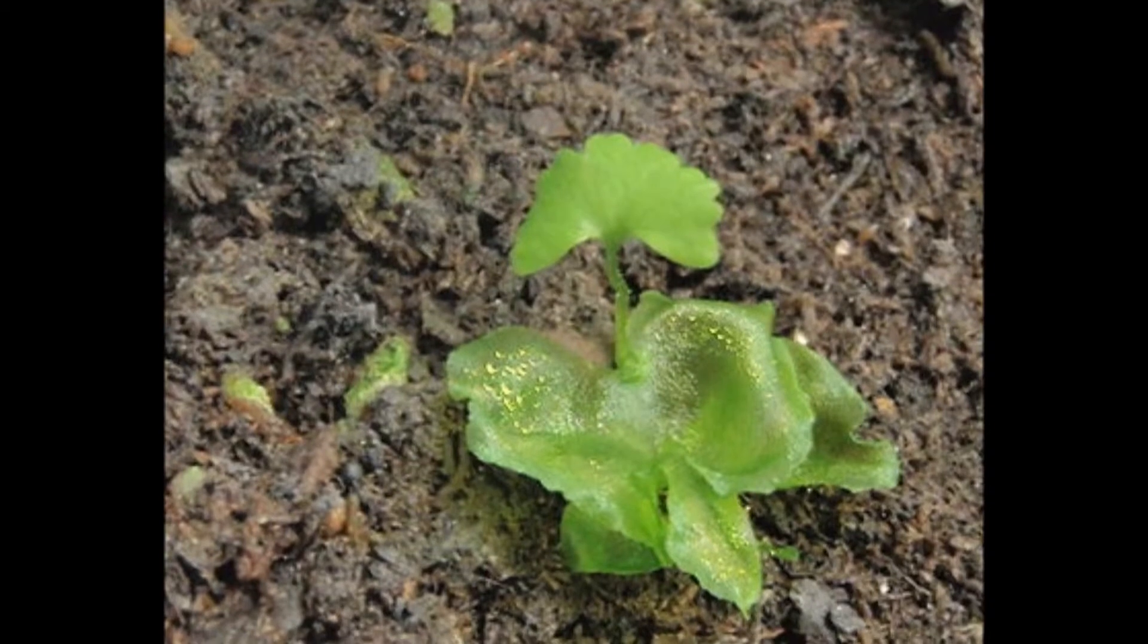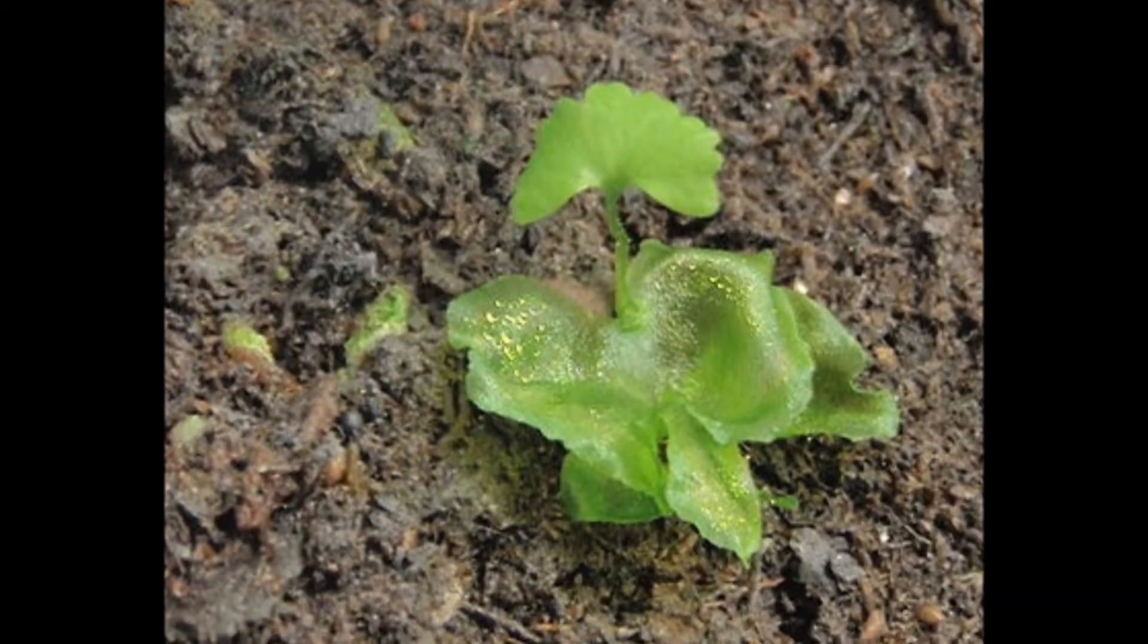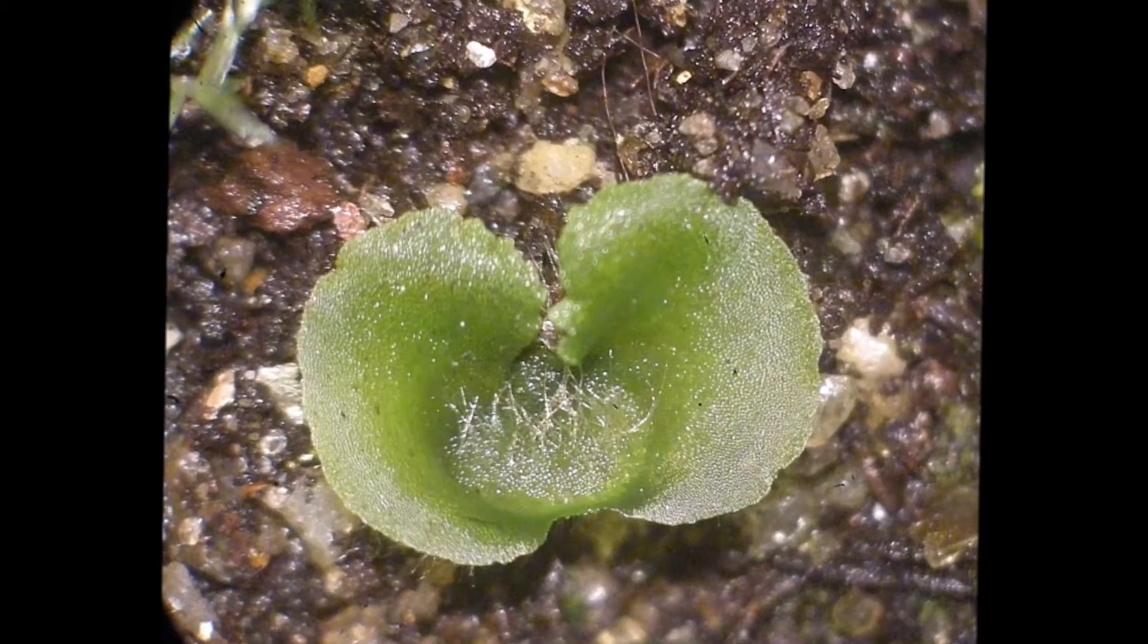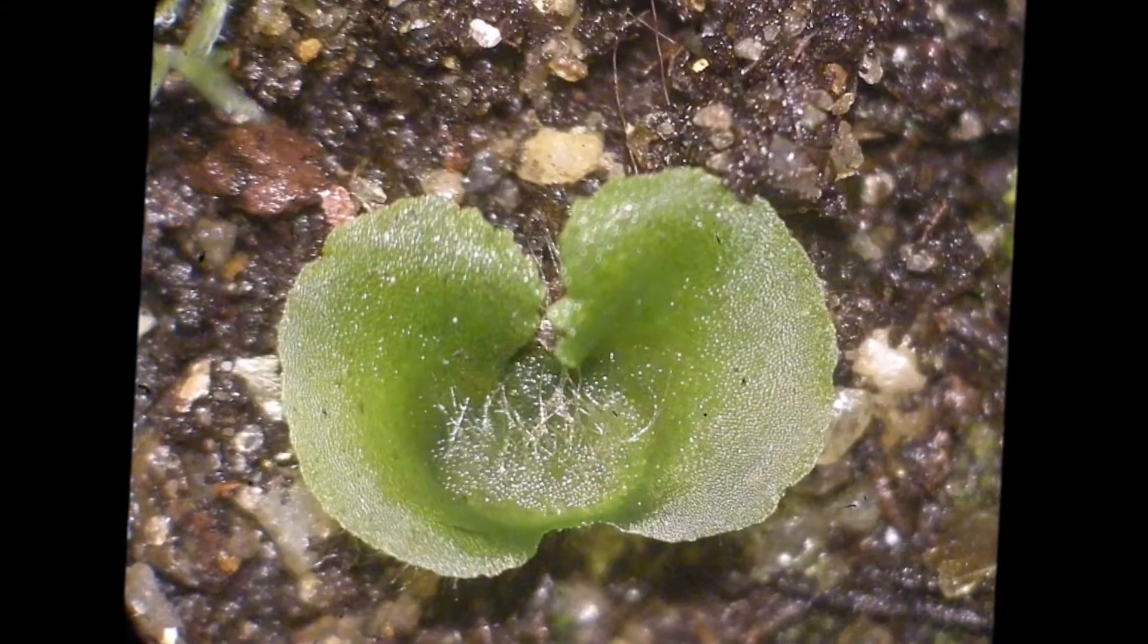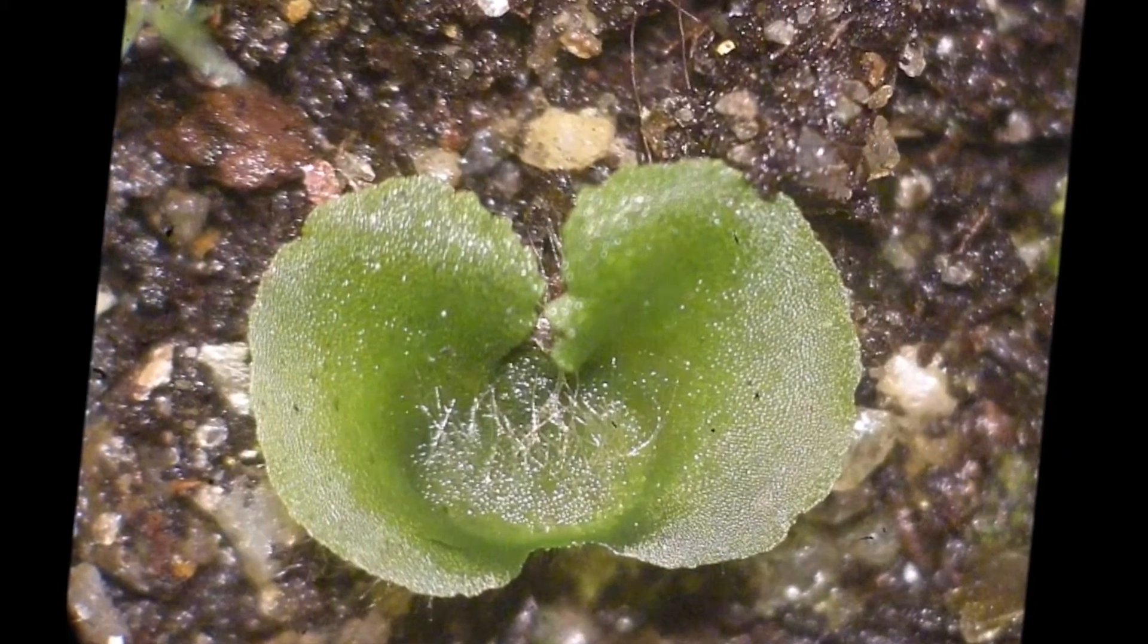This generation is much smaller than the sporophyte generation and is mainly due to the fact that because it's haploid, it is much more vulnerable to ultraviolet radiation. The smaller it is, the less exposure it has to these harmful rays.